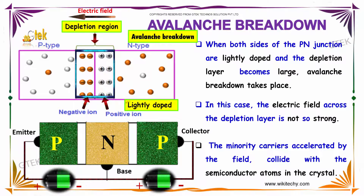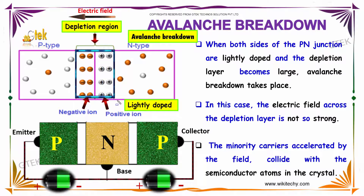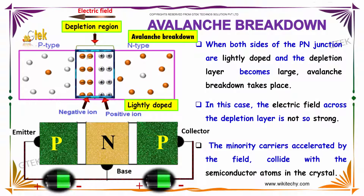When both sides of the p-n junction are lightly doped, the depletion layer becomes really large, and an avalanche breakdown takes place.